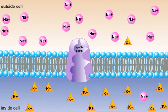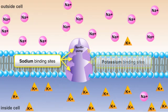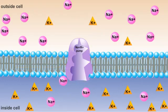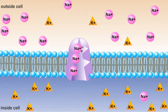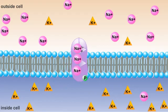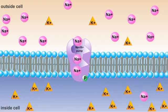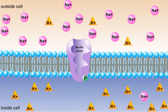The sodium-potassium pump has binding sites for three sodium and two potassium ions. Let's follow the movement of the sodium ions first. After three sodium ions are positioned within the carrier protein, an ATP molecule is split, releasing phosphate. This phosphate binds to a location on the exterior of the carrier protein, causing the protein to change shape. As the protein changes shape, the three sodium ions are released to the other side of the membrane.